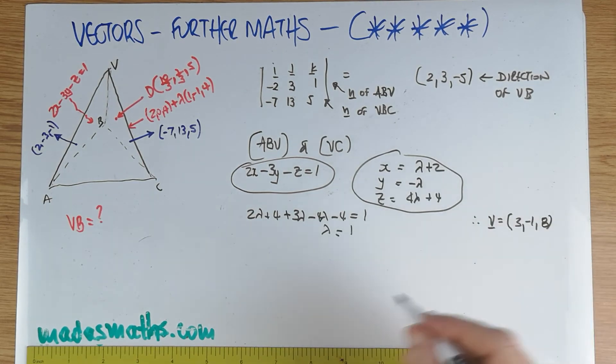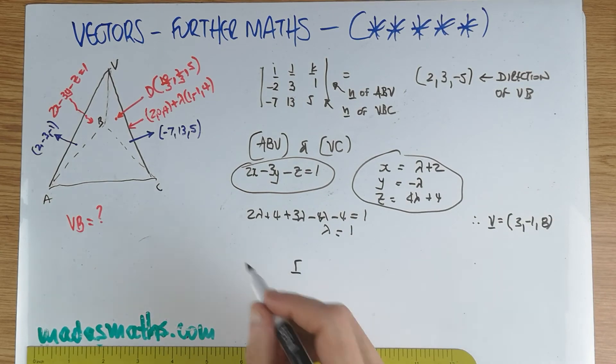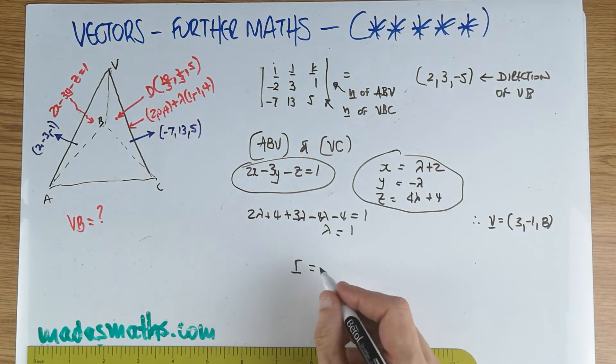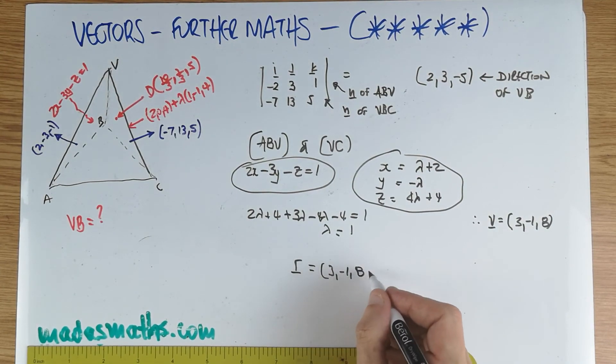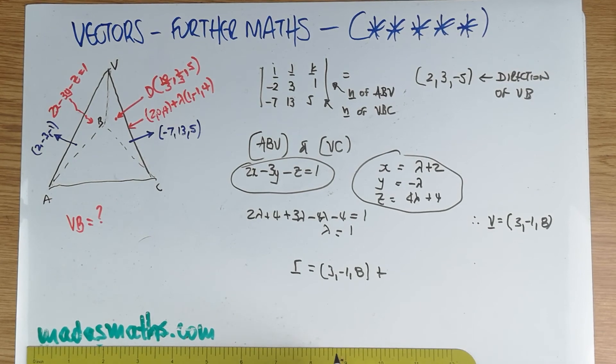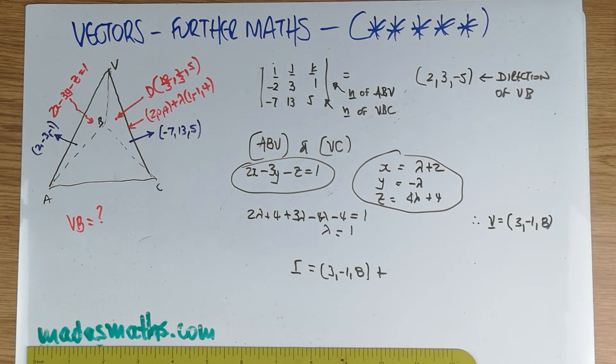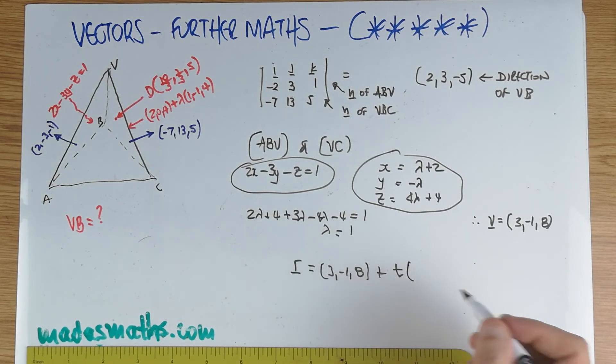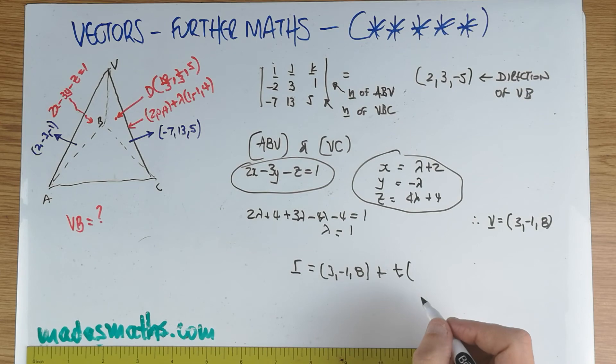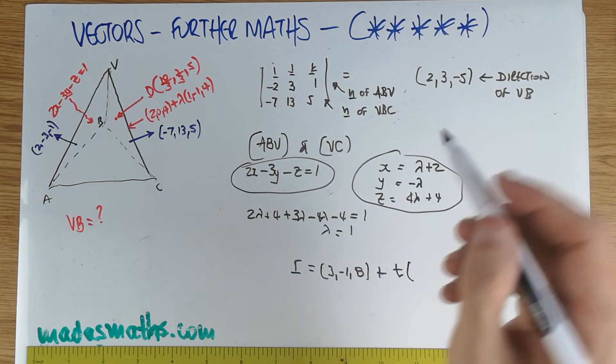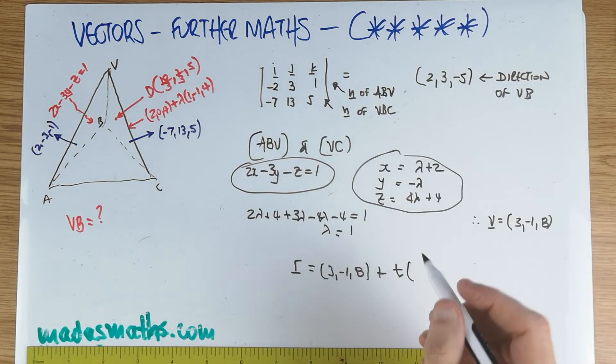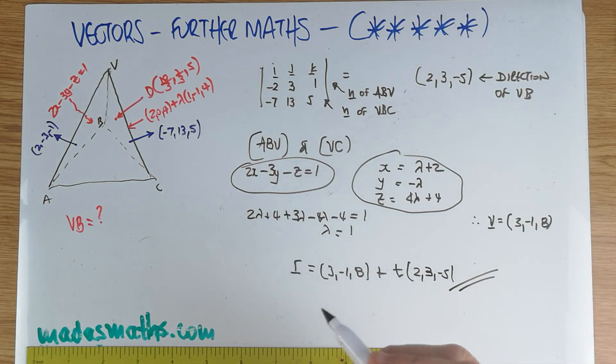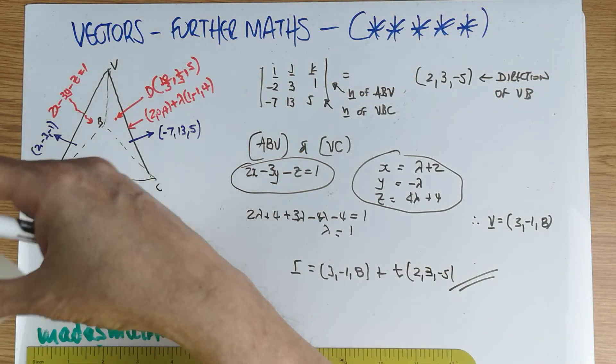And therefore, the point V, with lambda is equal to 1, is going to be 3, minus 1, and 8. And therefore, the equation of the line will be the coordinates of a fixed point on this line, which is just V, 3 minus 1, 8, plus any kind of parameter. I think the question used lambda earlier on. So let's use a different one, let's say T, or do we use mu? I don't think we use mu, it doesn't matter now, I wrote T. And the direction of this line, we found it when we've done the cross product. And we did check, of course, 2, 3, minus 5. And this is the answer to this particular question.